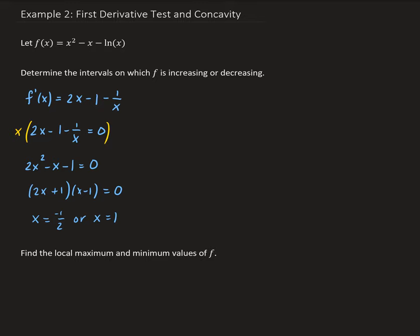We end up getting two solutions here. However, if we go back to our original function and look at the domain, because of natural log here, the domain of this function will only be when x is strictly greater than 0. So we don't need to worry about the negative one-half value because it's less than zero. So let's go ahead and plot these on the number line, going from 0 to positive infinity, with x equals 1 marked.